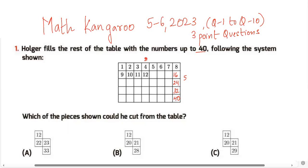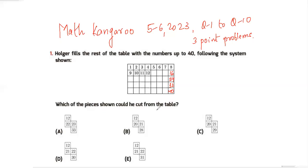The difference between consecutive numbers in the same column is just 8 each time. All the answer options start with a 12, so let's find where 12 appears in the table and work from there.